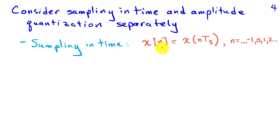So x of 0 on the left is x of 0 on the right, and then x of 1 on the left is the continuous signal x at time t sub s, x of 2 on the left is the continuous signal at time 2 t sub s, and so on. So that is the sampling in time, and that is our notation that we are going to use to represent that.